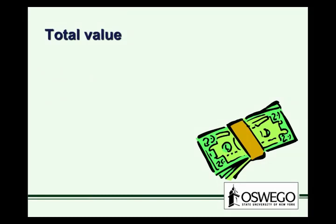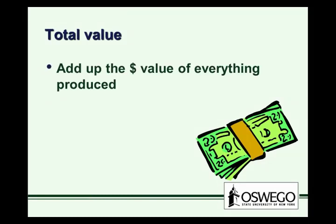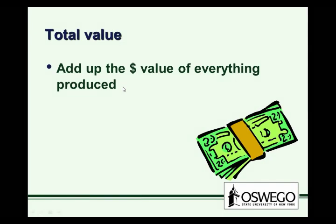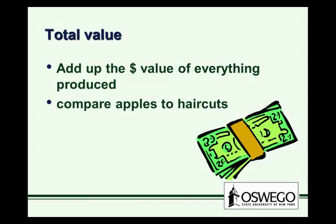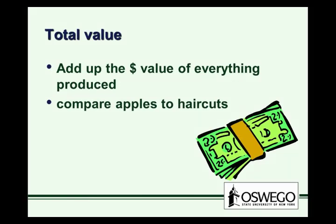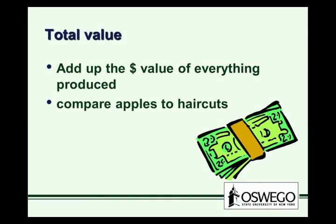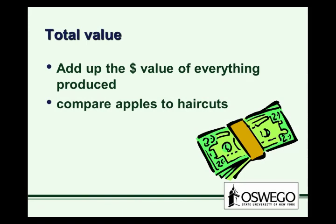Start with the total value. Basically, we're going to add up in the United States the dollar value of everything produced. Adding up the dollar value of everything helps us to compare, say, apples to haircuts. We can't just count everything because you really can't compare pounds of apples to the number of haircuts. By putting everything in a dollar value, we have a uniform measurement.